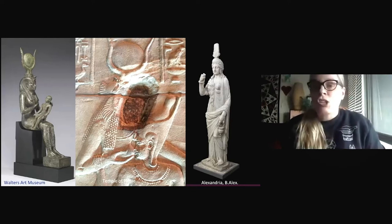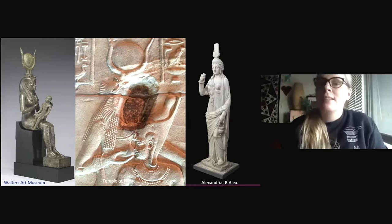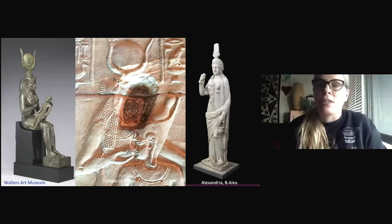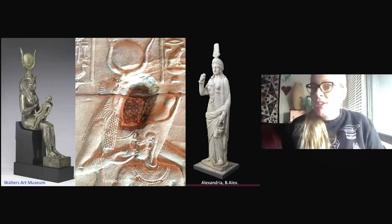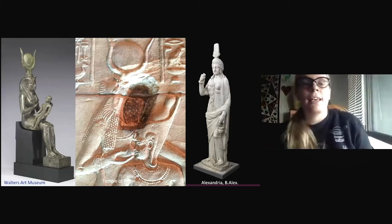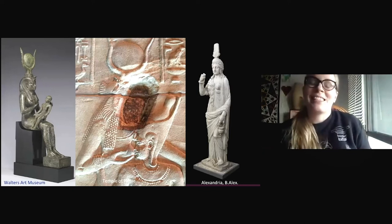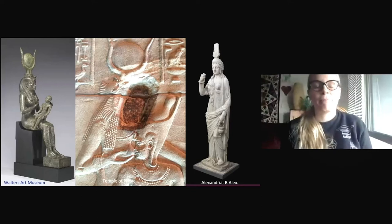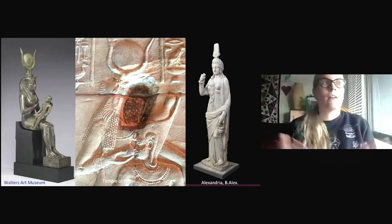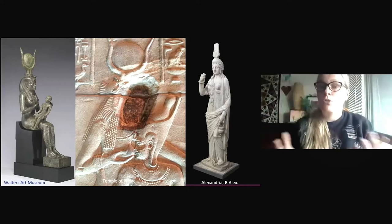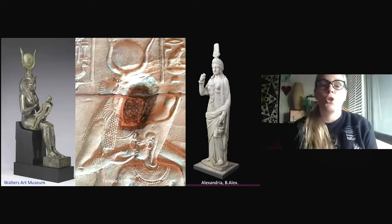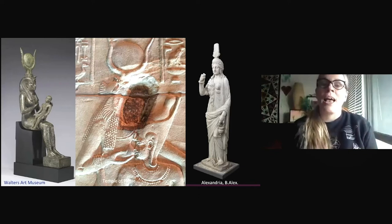Following that, she and Osiris conceived a son named Horus, who you can see on two of the pictures on the slide. Horus would eventually avenge his father and kick Seth out of the throne, because Seth had taken on the throne of Egypt. So Horus is known as kind of the first pharaoh. In the later period, including in the Hellenistic and Roman period which we're going to focus on today, Horus was known as Harpocrates.